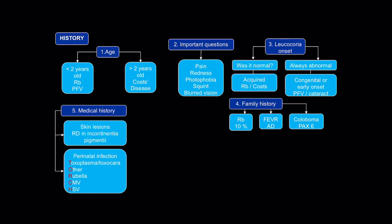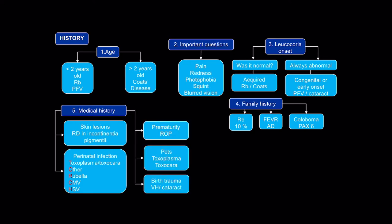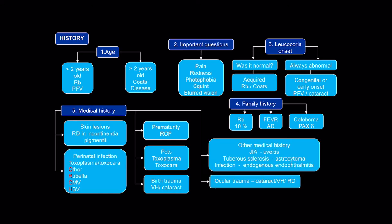Was there perinatal infection — the TORCH infections? Is there a history of prematurity? Think ROP. Are there pets? Think toxoplasma and toxocara. Was there birth trauma? Think vitreous hemorrhage or cataract. Is there a history of juvenile idiopathic arthritis? Think uveitis. Tuberous sclerosis? Think astrocytoma. Infection? Think endogenous endophthalmitis. And consider ocular trauma associated with cataract, vitreous hemorrhage, or retinal detachment.